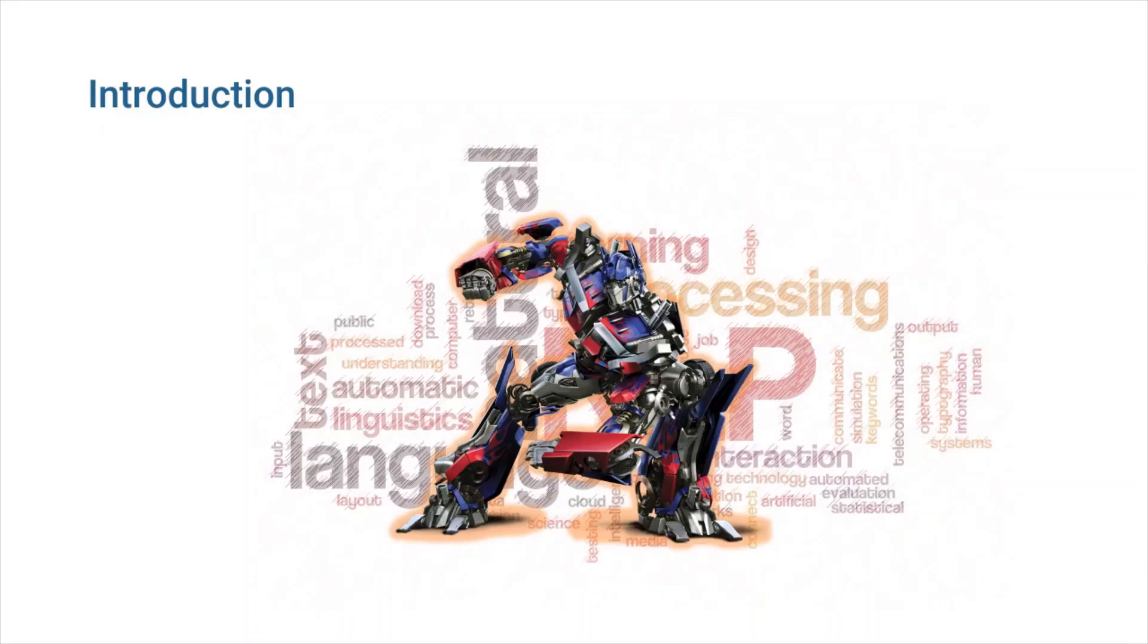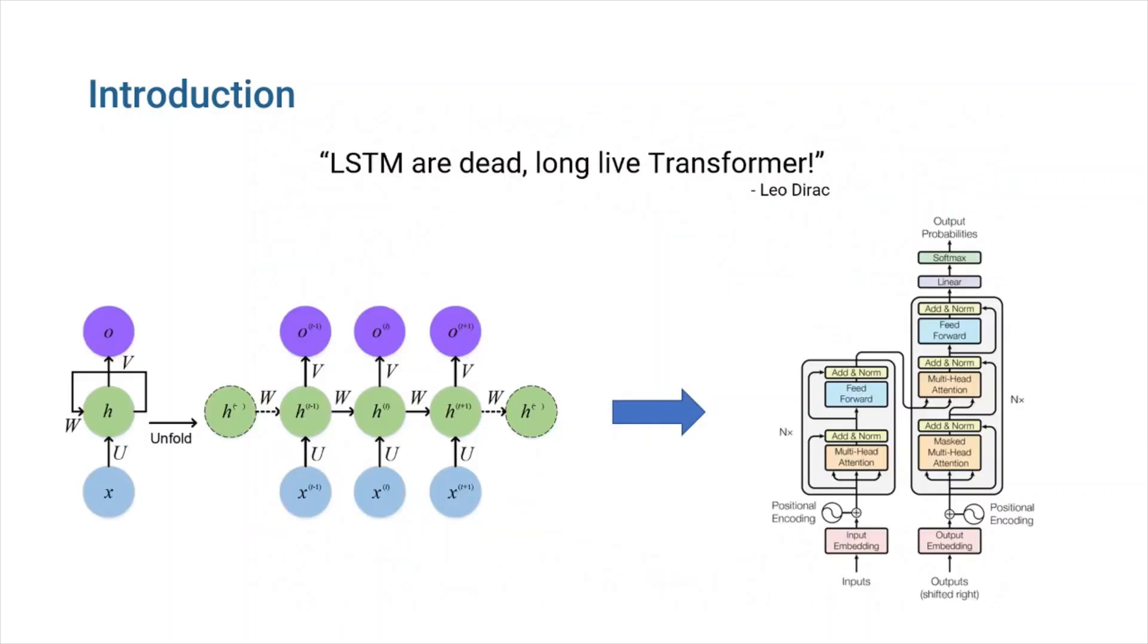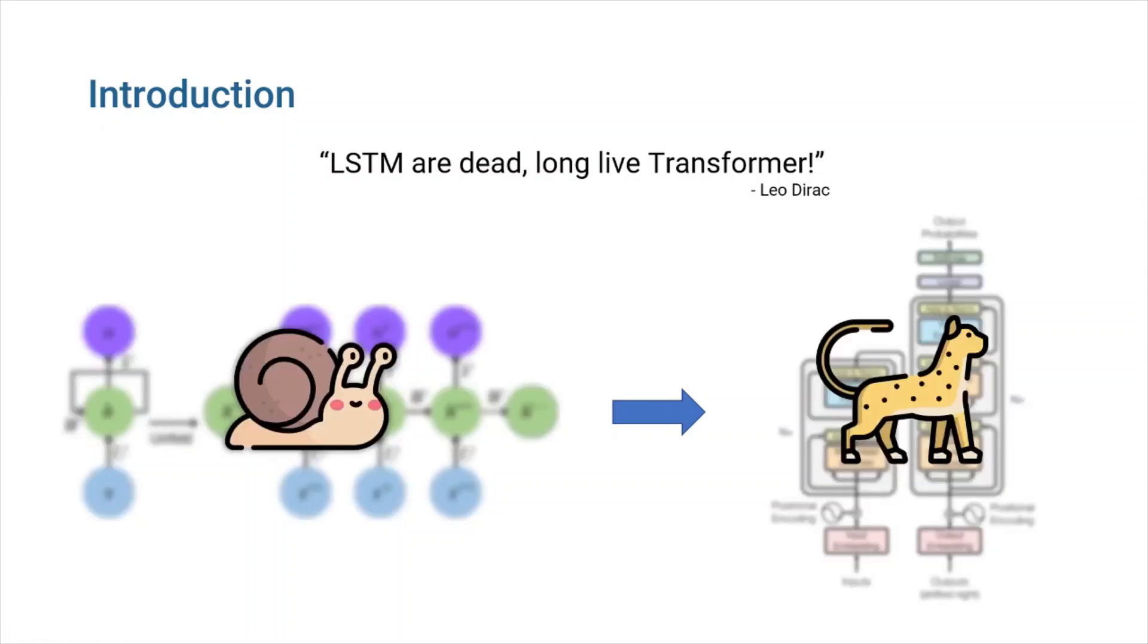Transformer architecture revolutionized natural language processing. It has been used in many state-of-the-art models and has replaced the RNNs that once dominated the field. The reason for this gradual shift from RNNs to transformers was that transformers were significantly faster than RNNs, because they could do parallel computations, something RNNs are incapable of.